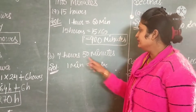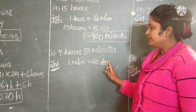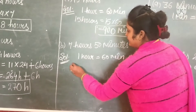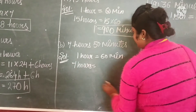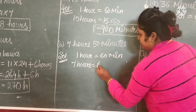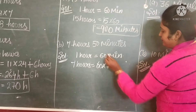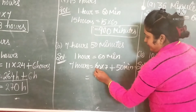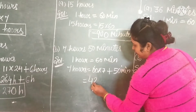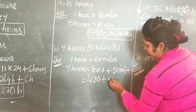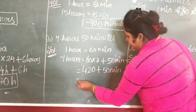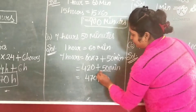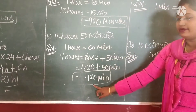Next question: 7 hours 50 minutes. Here, 50 is already in minutes, so we only convert 7 hours. 1 hour equals to 60 minutes. 7 multiplied by 60 is 420, plus 50 already in minutes gives us 470 minutes. So in 7 hours 50 minutes, we have 470 minutes.